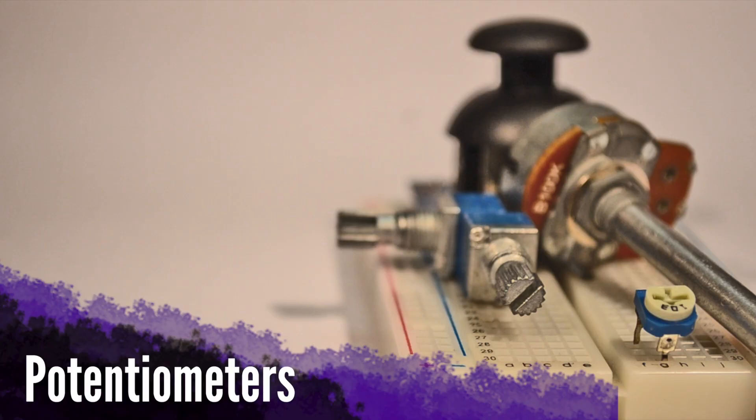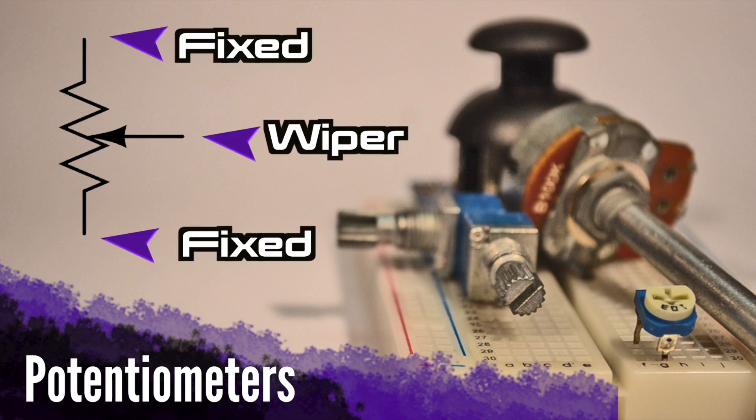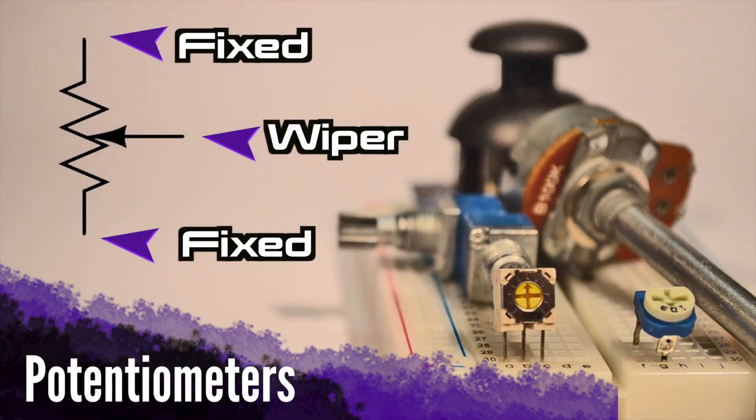In schematics, you'll see potentiometers represented like this. The upper and lower terminals represent the two fixed ends, and the lead extending from the center is the adjustable wiper.